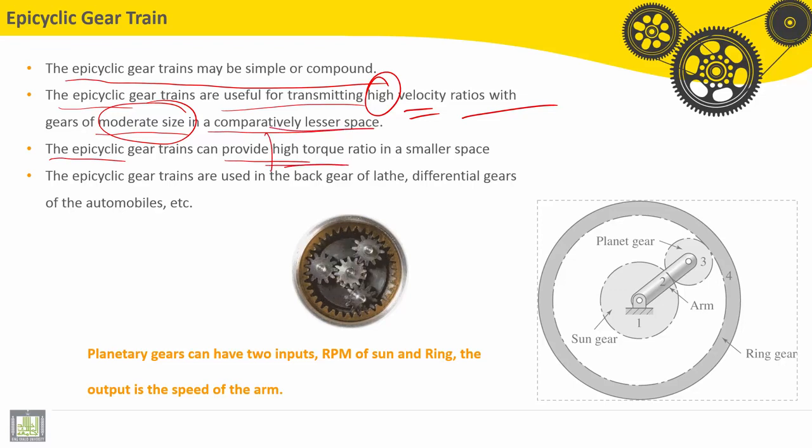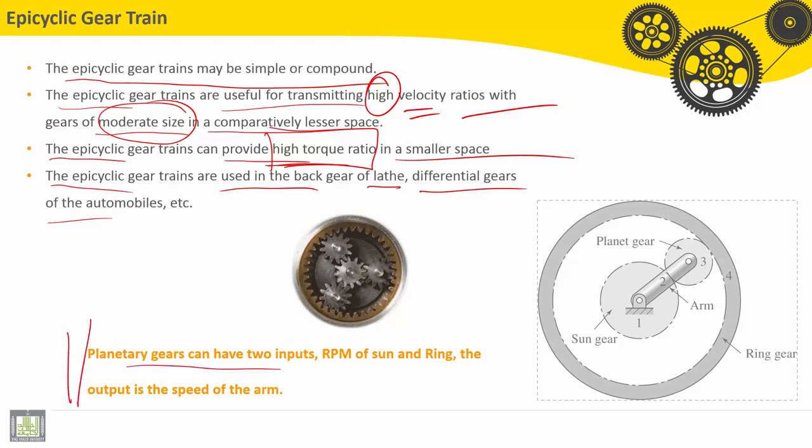The epicyclic gear trains are used in the back gear of lathes, differential gears of automobiles, etc. Planetary gears can have two inputs, RPM of sun and ring, with the output being the speed of the arm.